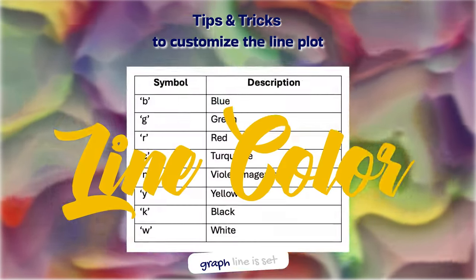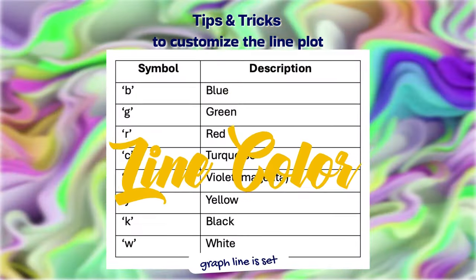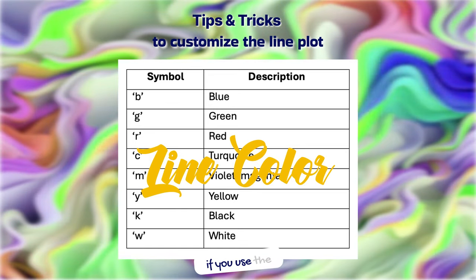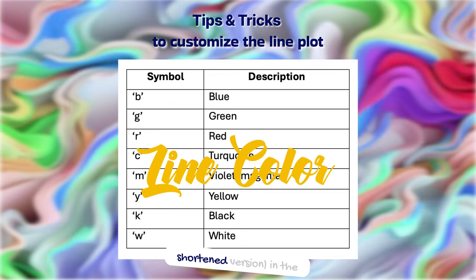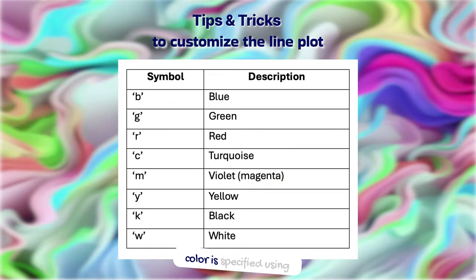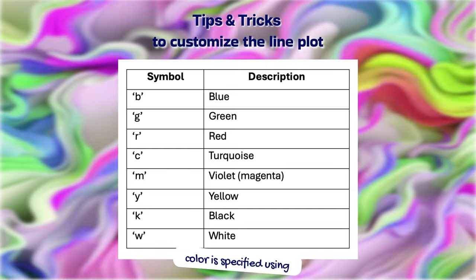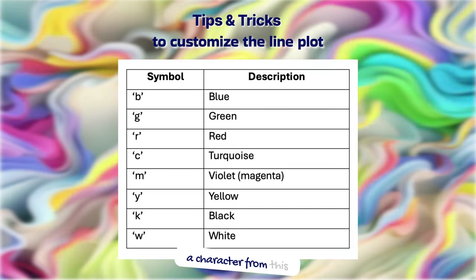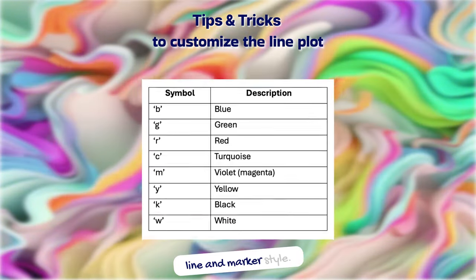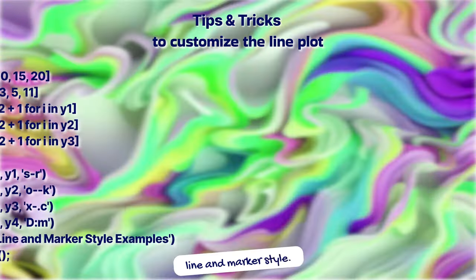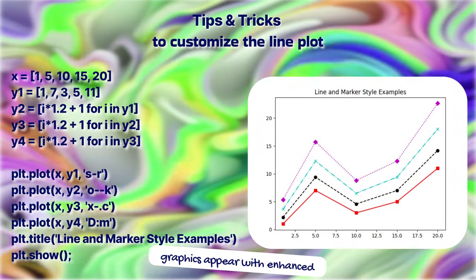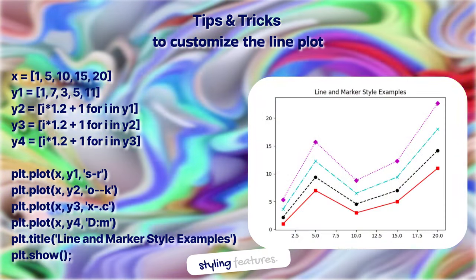The color of the graph line is set using the color parameter, or C for the shortened version, in the plot function. If the color is specified using a character from this set, then it can be combined with the line and marker style. Let's explore how our graphics appear with enhanced styling features.